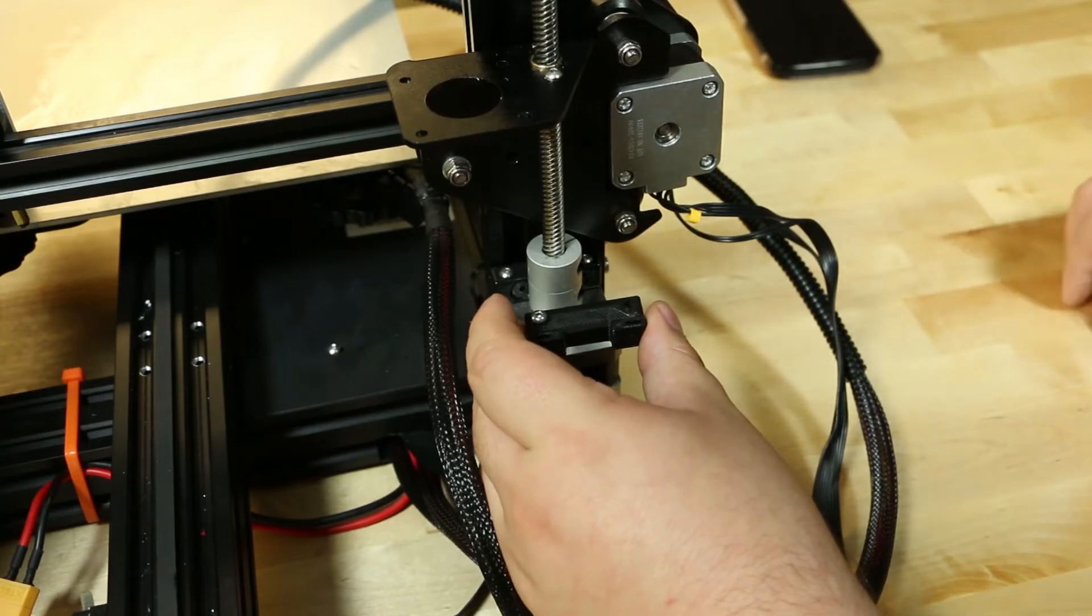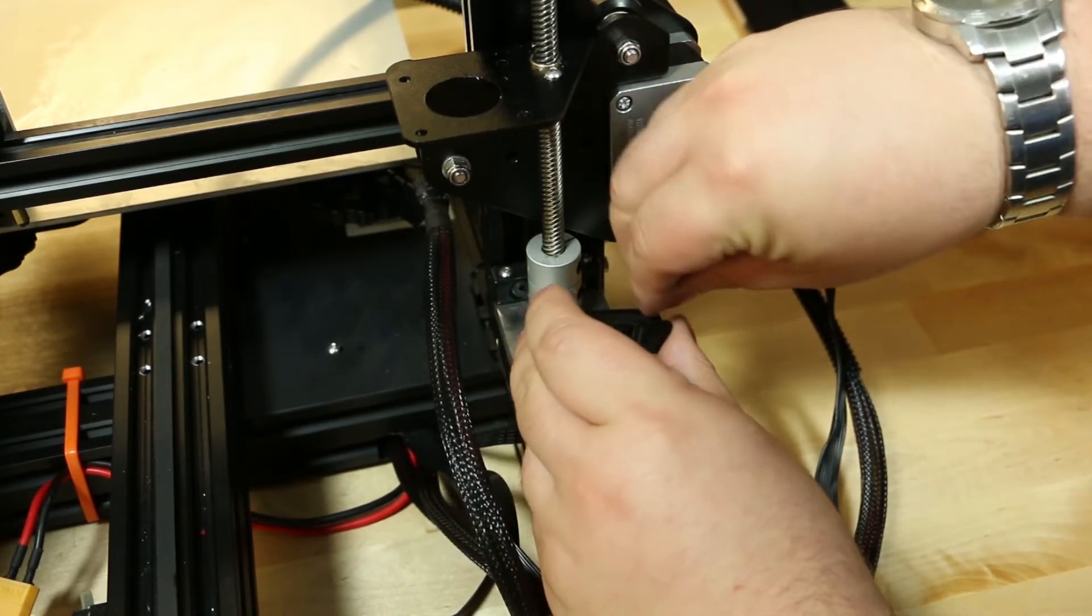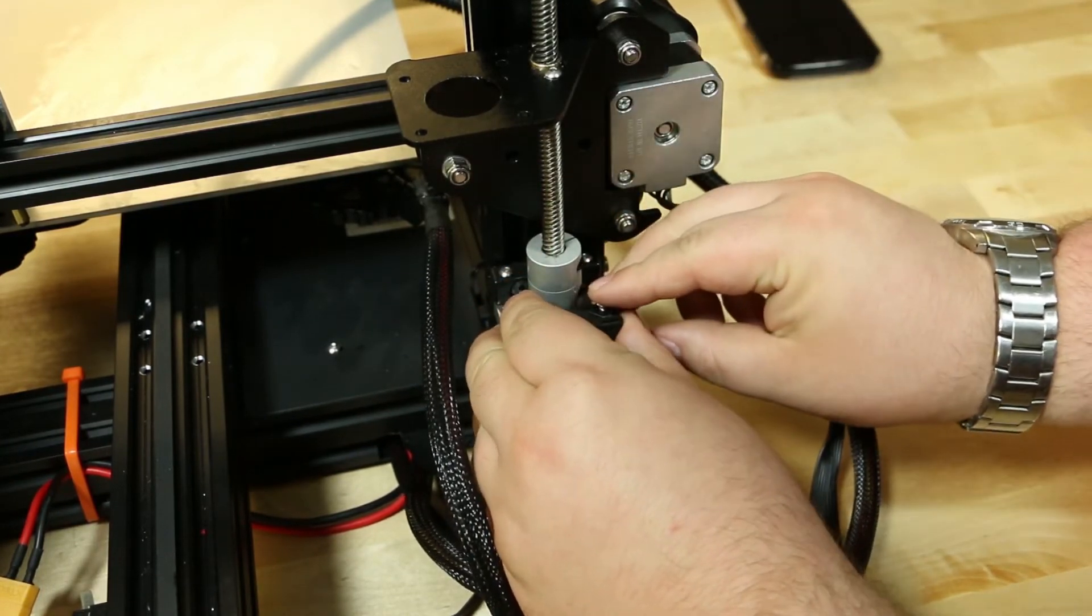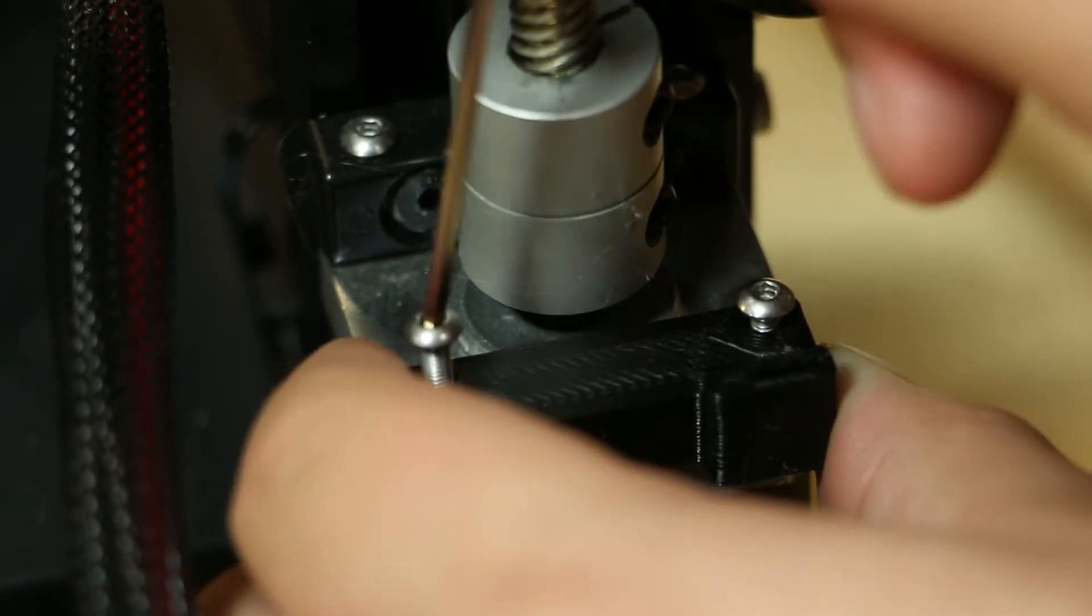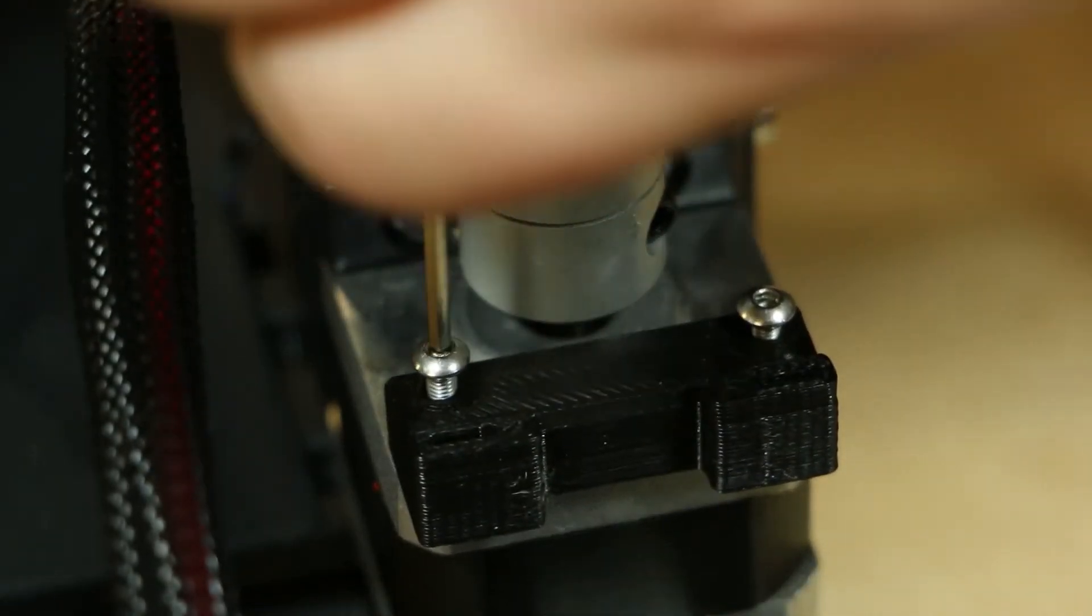For the rear cable holder, you will need the screws from the hot end that we removed at the beginning of the video. Take one of the cable holders and place the screws in using the 1.5mm Allen wrench. They will not screw in completely.